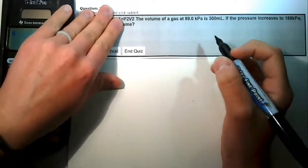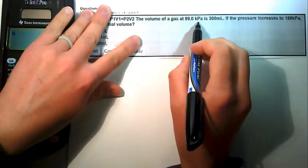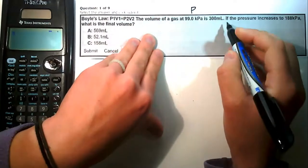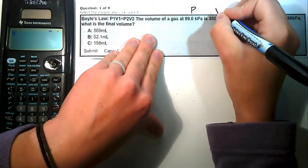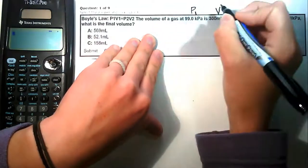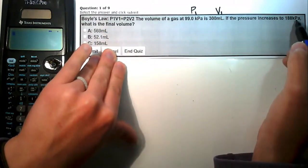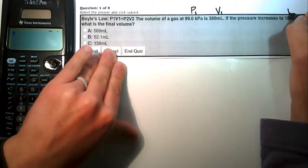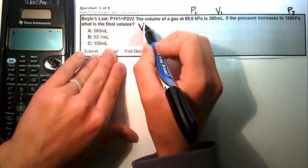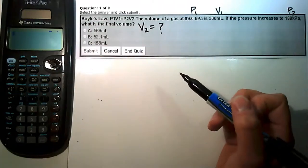Even if we didn't know this is a Boyle's law problem, we can identify the variables. Kilopascals is a unit of pressure and milliliters is a unit of volume. The volume at 99 kPa gives us our initial values: P1 = 99 kPa and V1 = 300 mL. The pressure increasing to 188 kPa is our P2, and we're solving for V2.